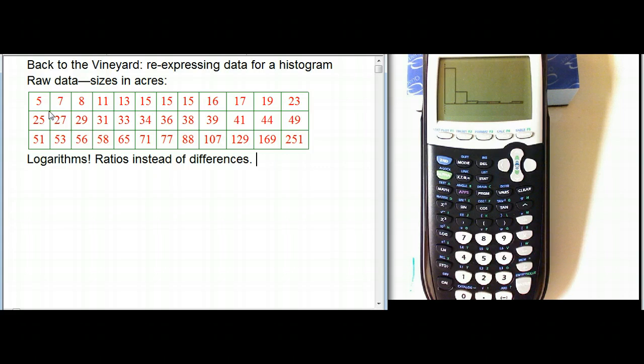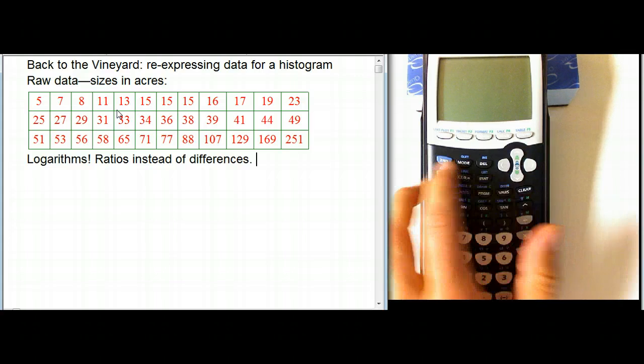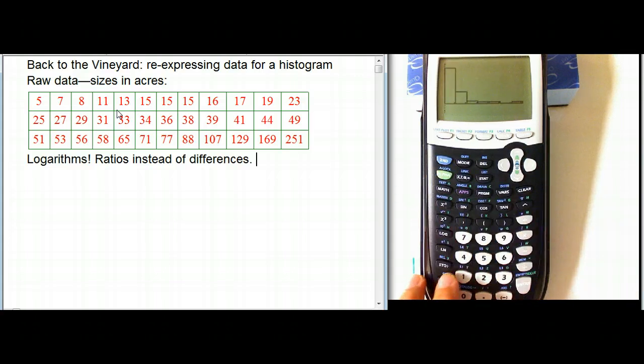So how would we do it on the calculator? So first of all, I actually invented this raw data to sort of reverse engineer the example. They didn't give us the raw data in the original version of the vineyard problem. But suppose this were the raw data. I made sure that it did match the histogram in the text, which was problem 9 in chapter 4. And let's go ahead and put that into the calculator. So I've already entered that into the calculator.